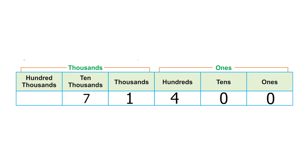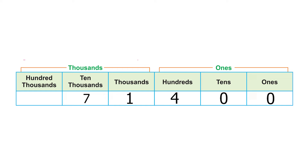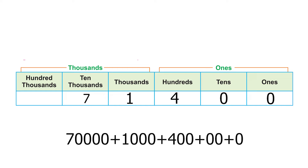7 is at the ten-thousands place and its place value is 70,000. 1 is at the thousands place and its place value is 1,000. 4 is at the hundreds place and its place value is 400. 0 is at the tens place and its place value is 0. 0 is at the ones place and its place value is 0. In expanded form, we write it as 70,000 + 1,000 + 400 + 0 + 0.